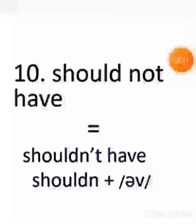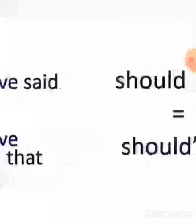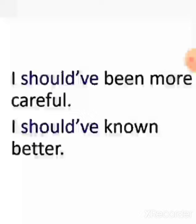Next we have 'should not have,' or 'shouldn't have,' or 'shouldn't.' In American accent we mix up the sounds and shorten the words, so in the shortest form it would be 'shouldn't.' Like: I shouldn't have said that, or I shouldn't have spoken to you that way. 'Should have' is equal to 'should've.' Focus on the way I pronounce the word — should've. I should have been more careful. I should have known better.